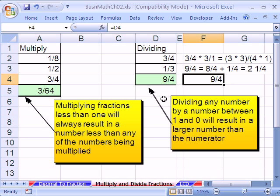How many 4s are in 9? Well, there's two of them, remainder 1. So it's 2, the remainder over the original denominator.